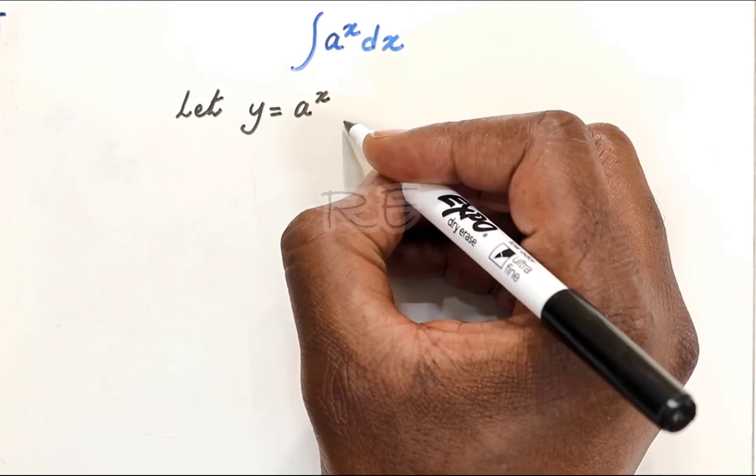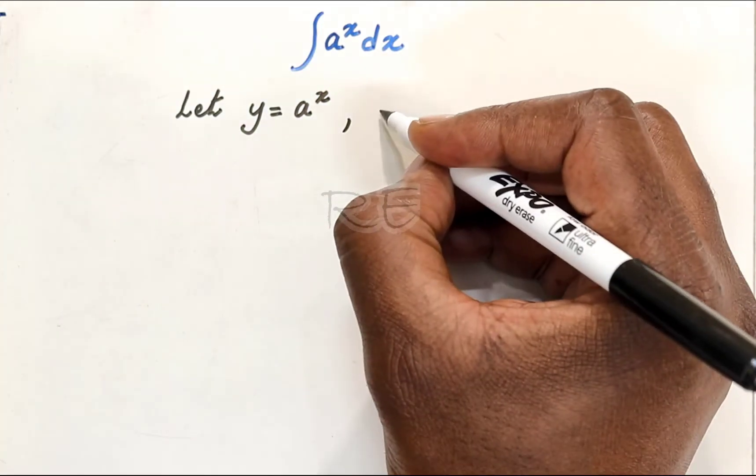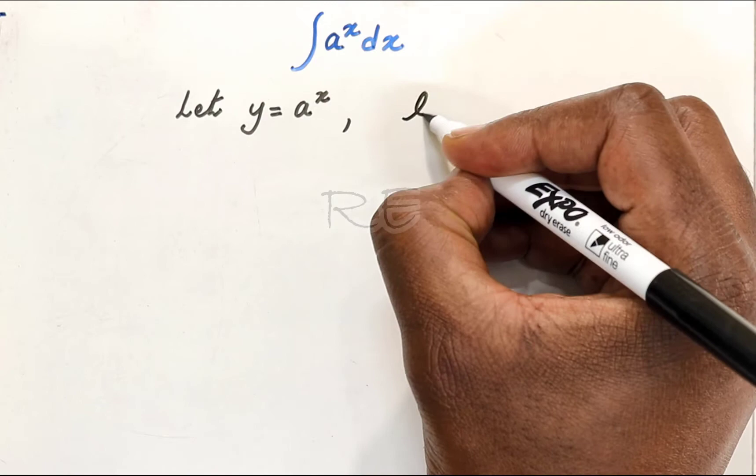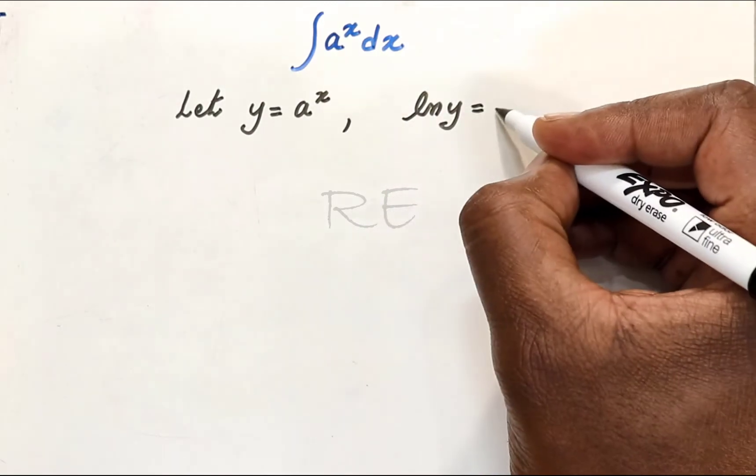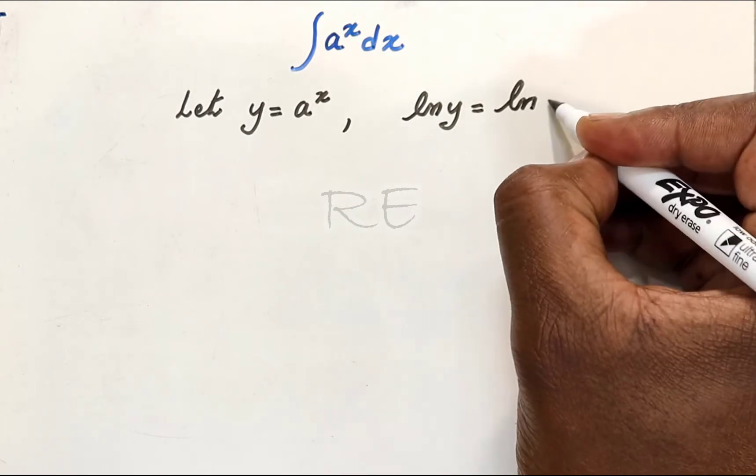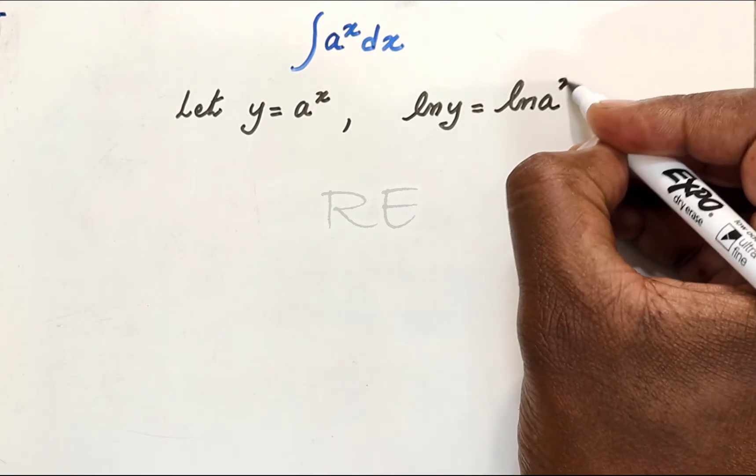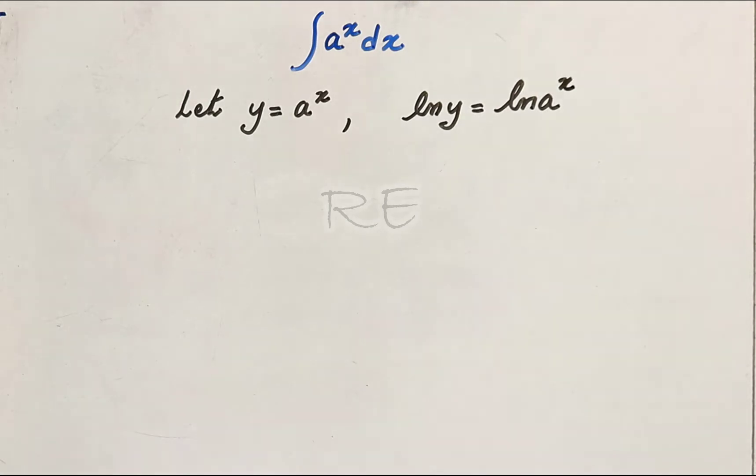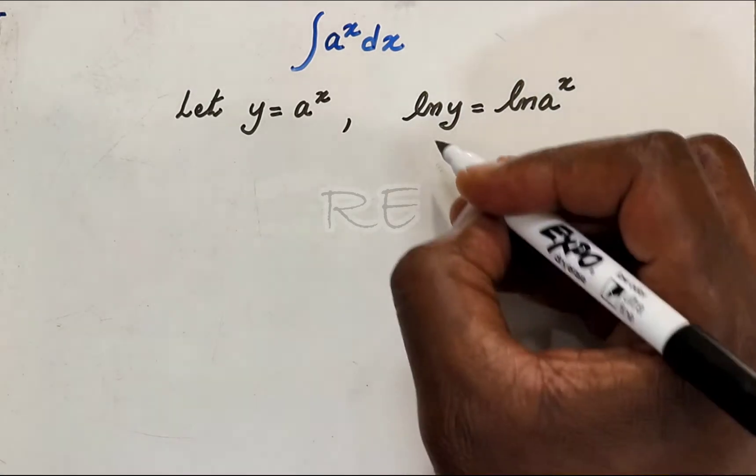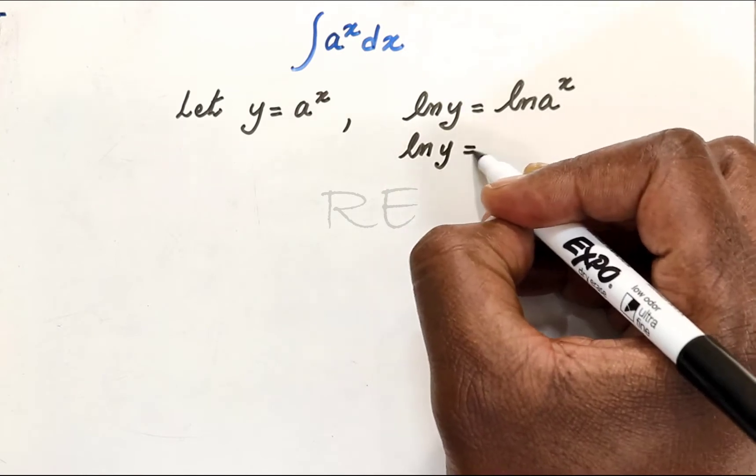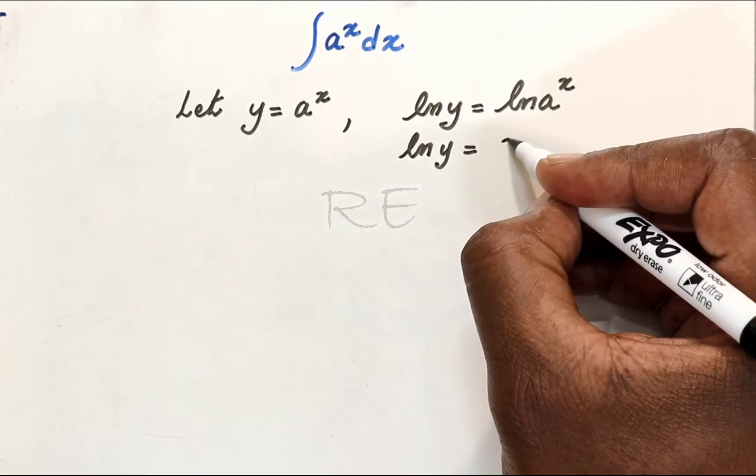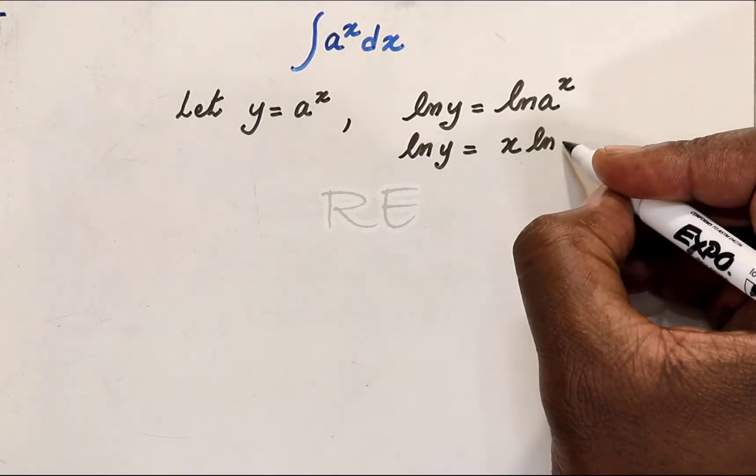Then if we take the ln of both sides, ln y is equal to ln a to the x. Using the rules of log, ln y is equal to x ln a.